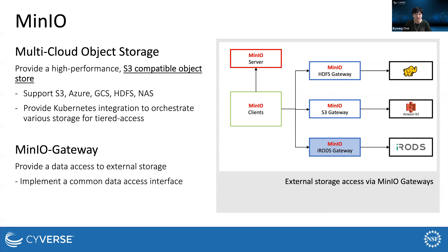MinIO Server is to configure a new storage cluster, and this is not covered in this talk. MinIO Gateway enables access to external cloud storage. As shown in the right figure, MinIO Gateway provides data access to various cloud storage such as Amazon S3, and we made a new gateway to add iRODS support as well. Users access MinIO using MinIO Clients, such as Web Console and the Linux command line tool called MC, and we can use the API as well.